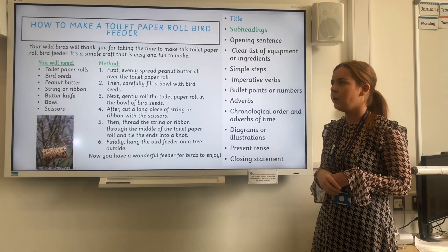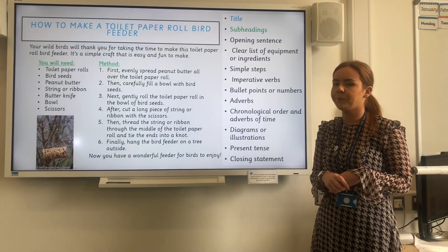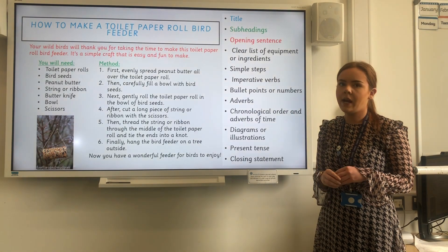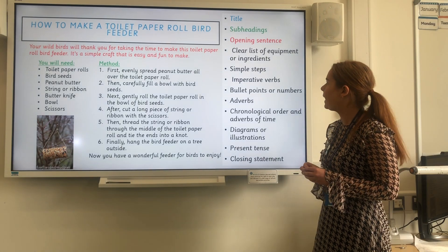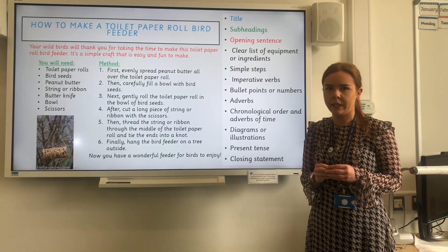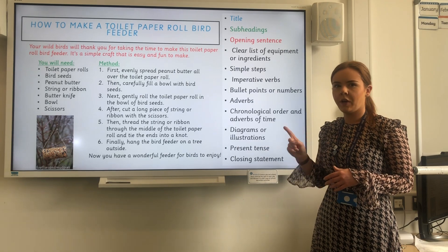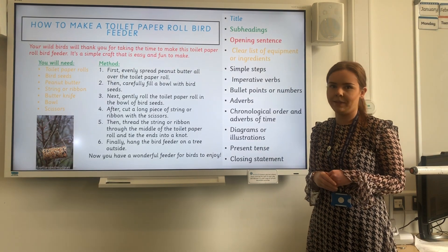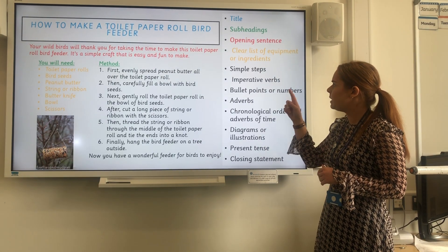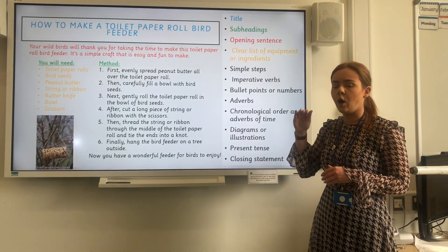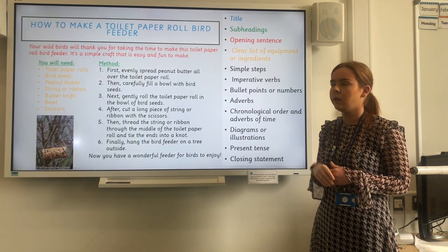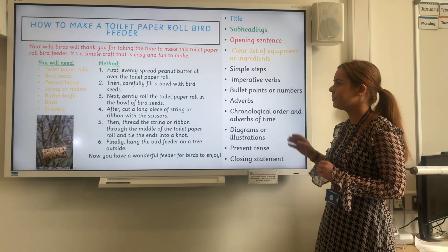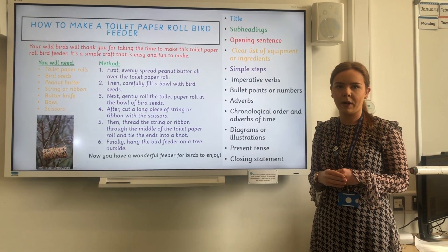Point to the screen to see where you can find it. Next we are going to be looking for a clear list of equipment or ingredients — point to the screen where you can see that. And it is here, well done. Next we are going to need some simple steps to see how to make whatever the instruction text is about — have a little read — and they are there, well done.